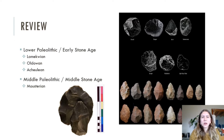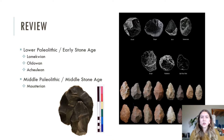After the Lomekwian, we see the Oldowan, dated to between about 2.6 to 1.7 million years ago, mostly associated with Homo habilis. The Oldowan is considered mode one tool technology, consisting of basic core and flake tools. The primary technique used was freehand knapping, creating roughly shaped flaked tools.